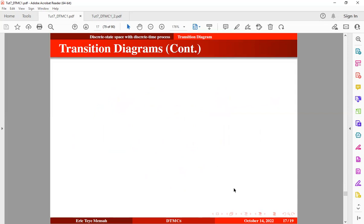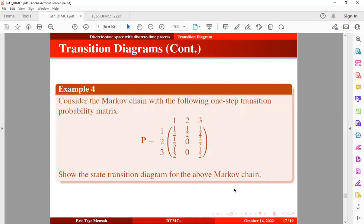Alright, so let's take an example again. Consider the Markov chain with the following one-step transition probability matrix. So here we have three states, state 1, state 2, state 3, our future state, and our current state. So show the state transition diagram for the Markov chain. So how do we do this?